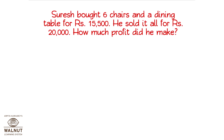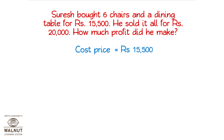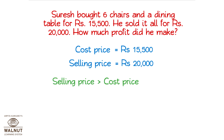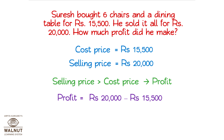Suresh bought six chairs and a dining table for Rs. 15,500. He sold it all for Rs. 20,000. How much profit did he make? Since the selling price is more than the cost price, we have a profit. The difference is 20,000 minus 15,500, which is 4,500. The profit is Rs. 4,500.